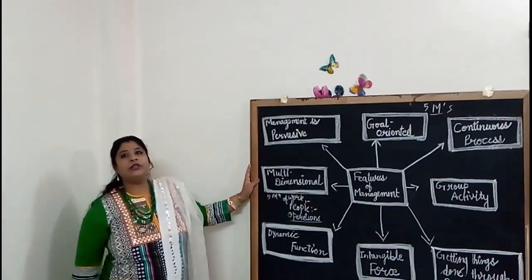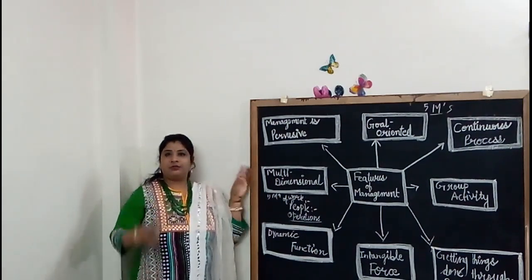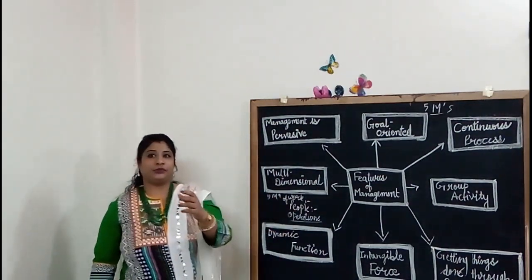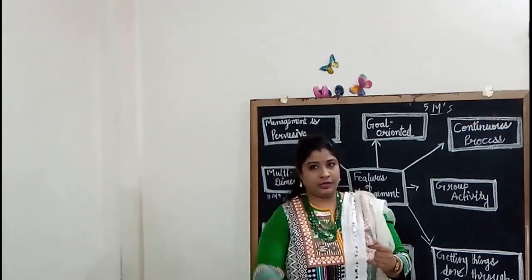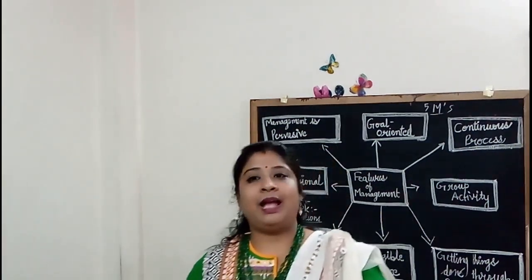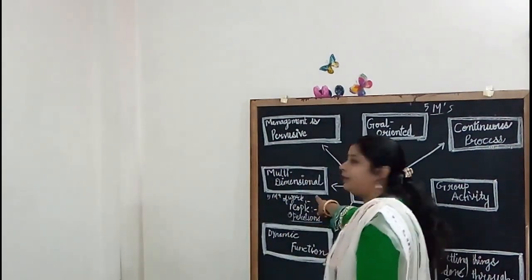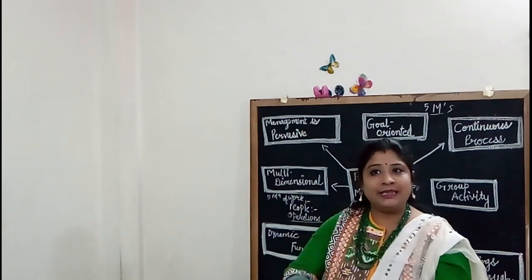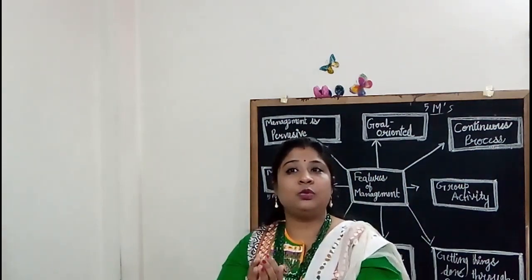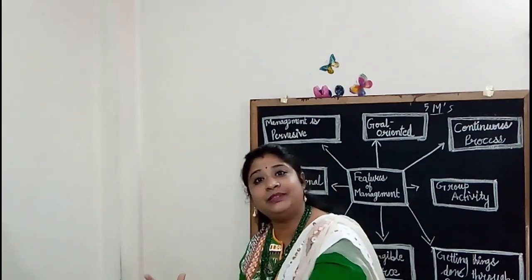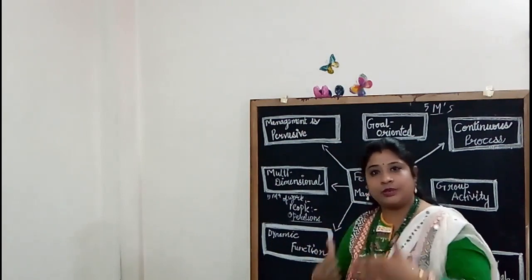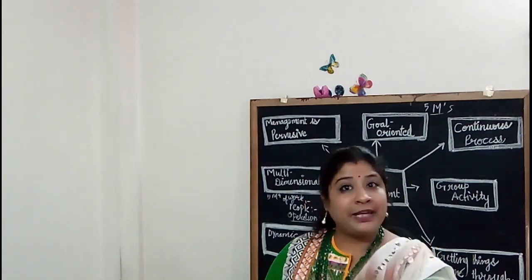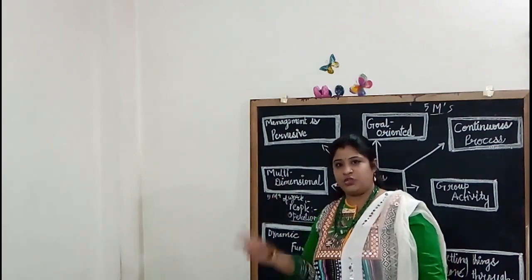The next characteristic is that management is Multidimensional. Management is not confined to the administration of people only — it also manages work, process, and operations, which makes it a multidisciplinary activity. Management is a complex activity that has three main dimensions. The first is Management of Work: all organizations exist for the performance of some work, and management translates roles in terms of goals to be achieved and assigns the means to achieve them. For example, the work to be accomplished in a school is providing education, so management ensures that work is accomplished efficiently and effectively.